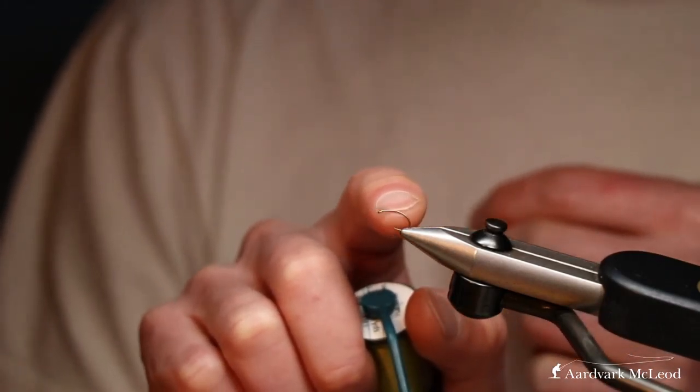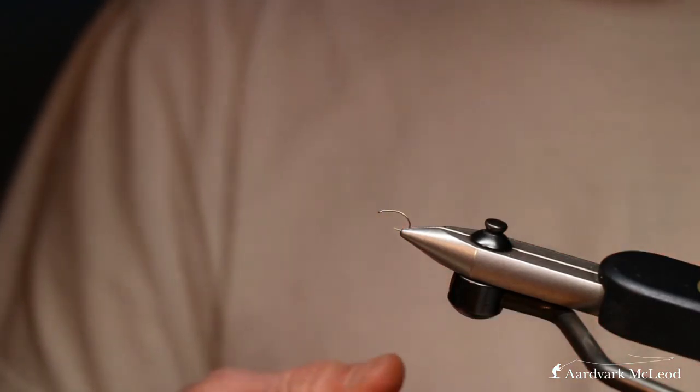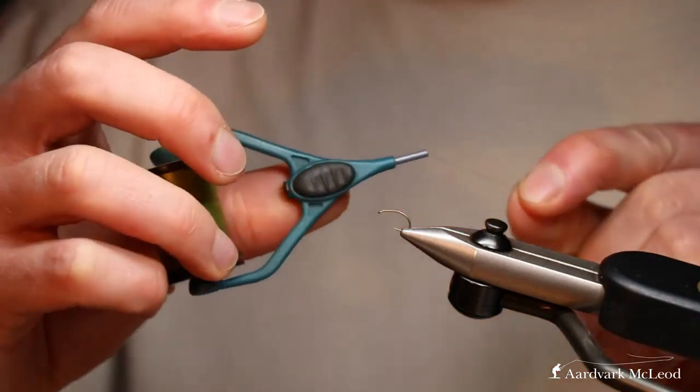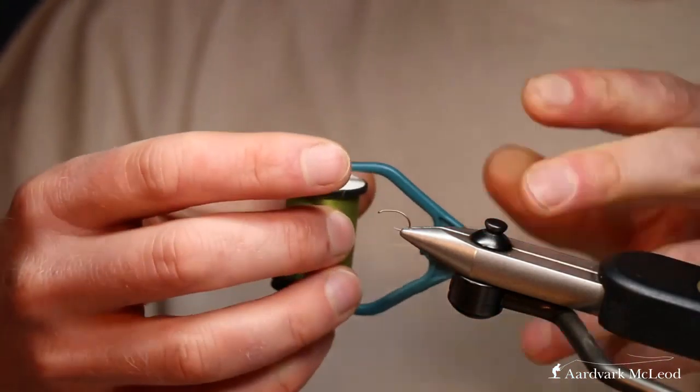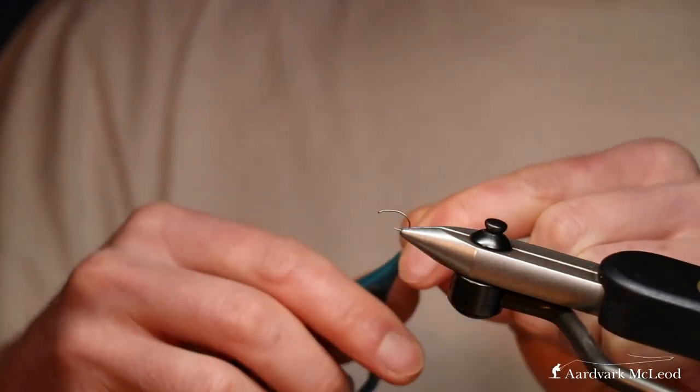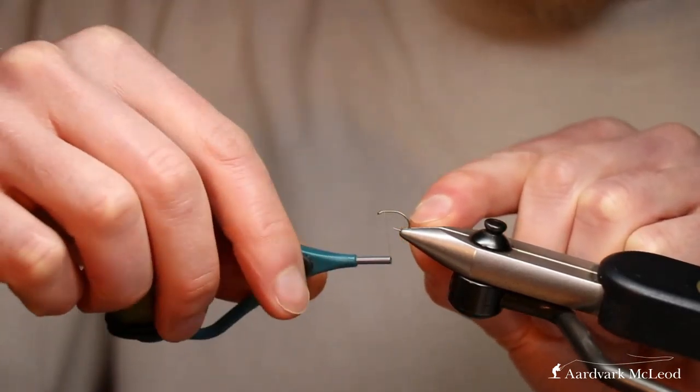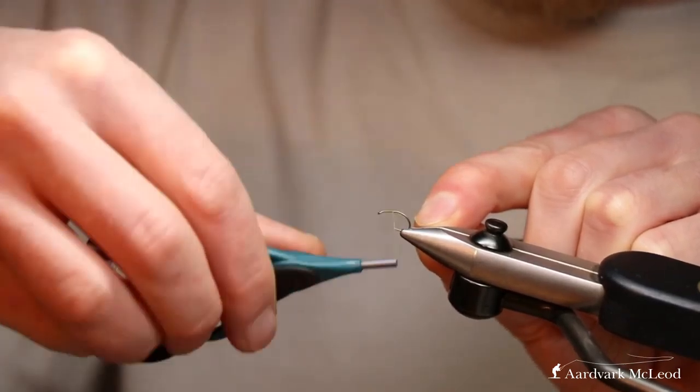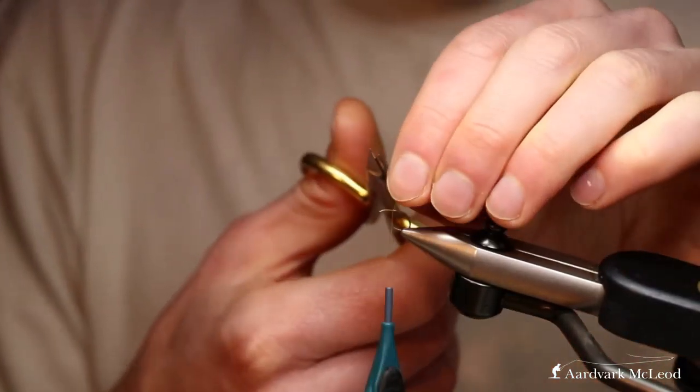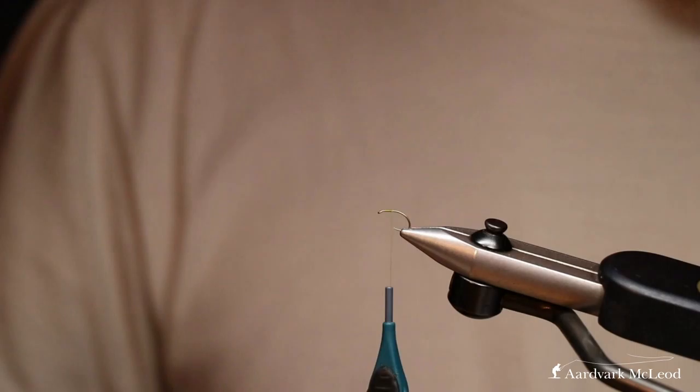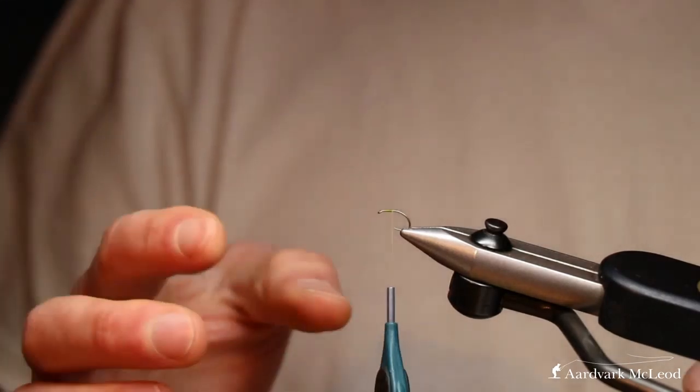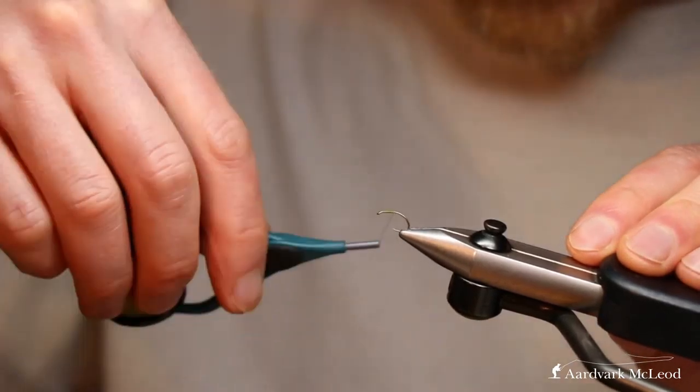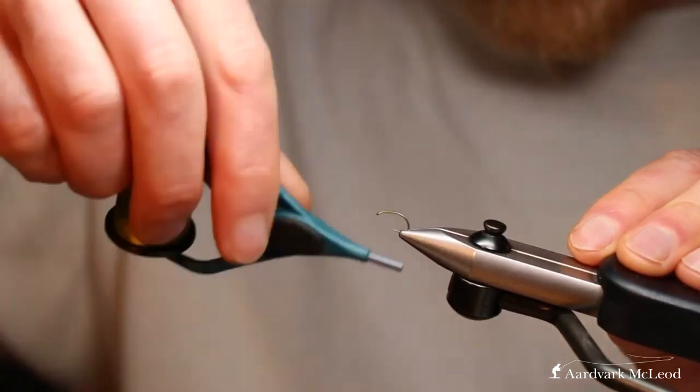So here we've got the Sprite hook, the S2100 in a size 14. They call it a buzzer hook but it's great for this style of fly. You can tie these all the way down to an 18, you can tie them down to 20s, and you can tie them on straight hooks as well. One of the things I like about this is how the shank straightens out towards the eye of the hook. Thread-wise we've got the Centrefly Watt Silk in Pale Olive 12-0.